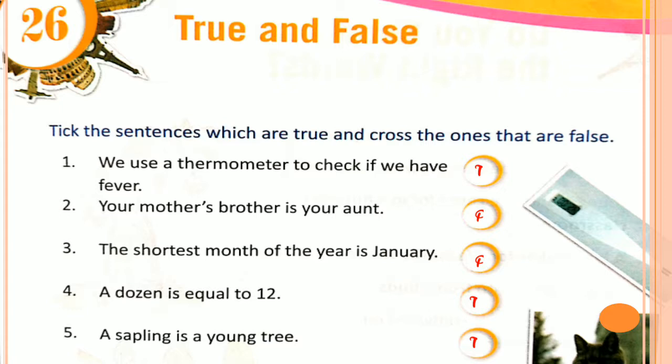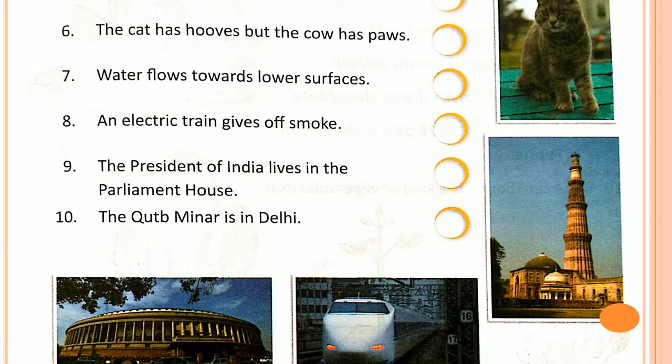Number 6: The cat has a horse but the cow has a paw. Is it true or false? Actually, the cat has paws and the cow has hooves — so this sentence is FALSE. We write false here.